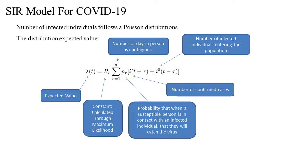The number of infected individuals in the SIR model follows a Poisson distribution. The distribution's expected value is shown in the equation in the slide. The expected value, or lambda, is dependent on the number of days a person is contagious, the number of infected individuals entering the population, the number of confirmed cases for each day, the probability that when a susceptible person is in contact with an infected individual they will actually catch the virus, and the constant RE, which is calculated through maximum likelihood.